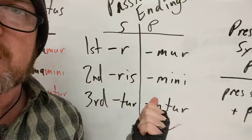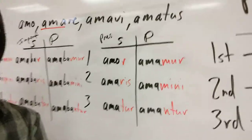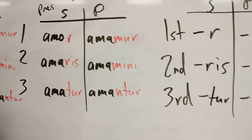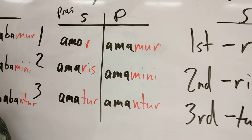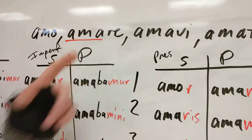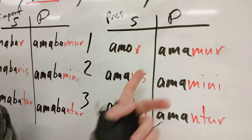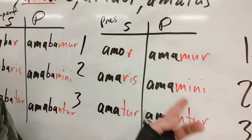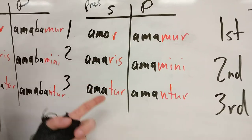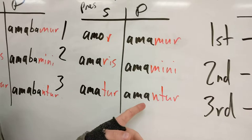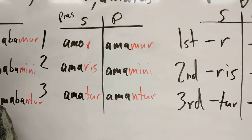All you do to make a verb passive is apply these endings to the same present stem you would have used if the verb were active. So as an example, with the verb 'to love': where I would have had amo, amas, amat, amamus, amatis, amant — I've just replaced those active endings with the passive ones, still working off the present stem ama-. You keep the -o in the first person, giving you amor, then amaris, amatur, amamur, amamini, amantur. That's: I am loved, you are loved, he/she/it is loved, we are loved, you all are loved, they are loved.